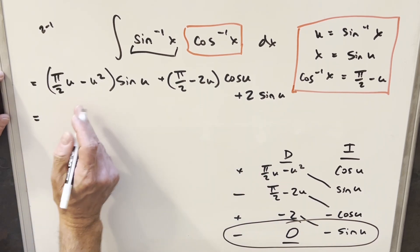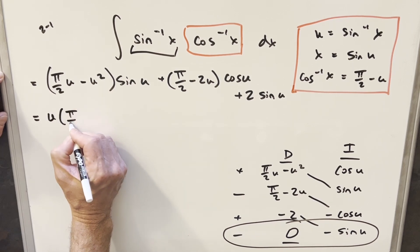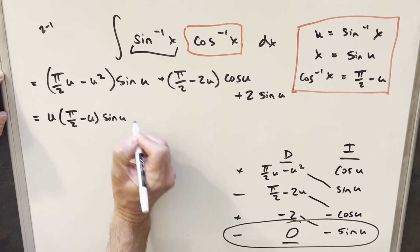Before I back substitute, I'm just going to do some cleanup here. Out of this term, I'm just going to factor the u out. So we have u times π over 2 minus u sine u.